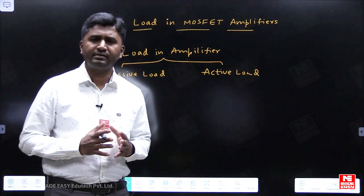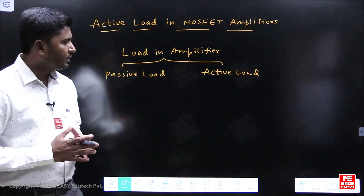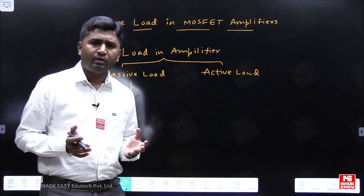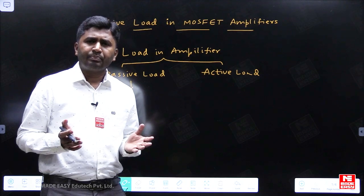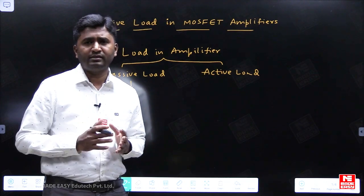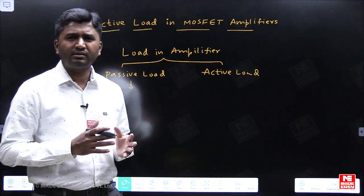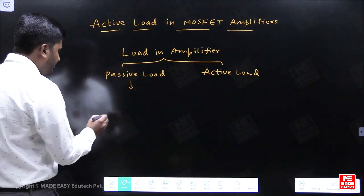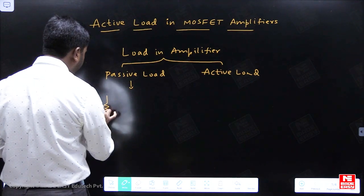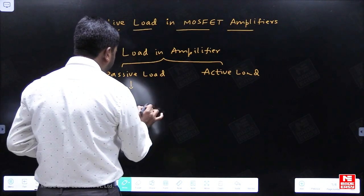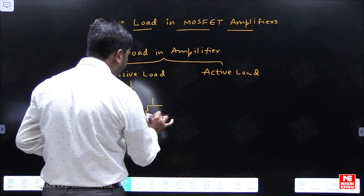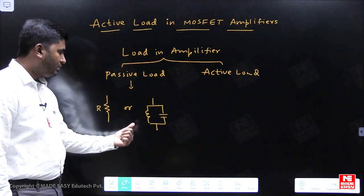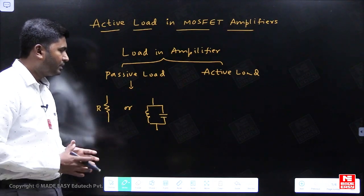When I say passive load, I mean a resistor can be used as a load. A resistor is a passive element. It can also be a parallel combination of inductor and capacitor. Resistors, inductors, and capacitors are all passive devices, so these are examples of passive load.